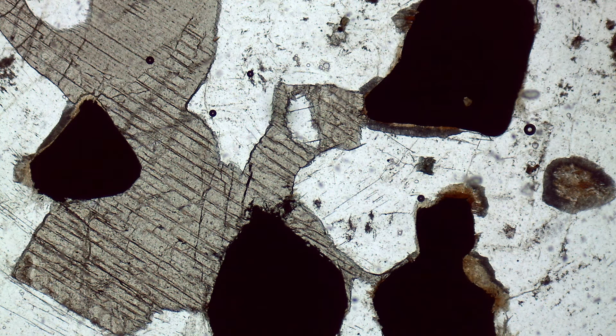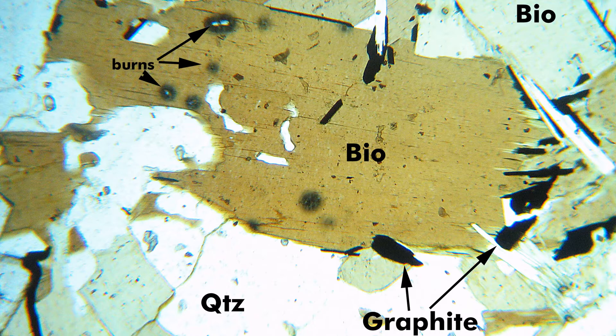Iron oxide and iron sulfide minerals like magnetite and pyrite, along with organic matter and materials containing heavy metals, all tend to appear black or very dark brown in petrographic thin sections due to high opacity — they are opaque and block light from shining through. Many of the most common minerals in sedimentary geology, however, are translucent in plane polarized light, including quartz, feldspar, calcite, micas, and clays.